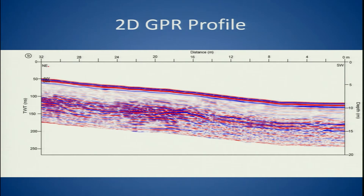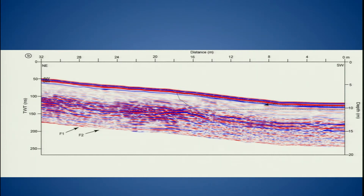This is your northeast side — this is your upthrown block and this is your downthrown side, your foot wall. This part is towards the Indo-Gangetic plain and this is towards the Sub-Himalayas. We opened up the trench here — the length was almost 16 to 18 meters and the depth was not much, hardly 2 to 3 meters. With the help of the trench section and the GPR, we were able to extend the fault deeper up to 8 meters.